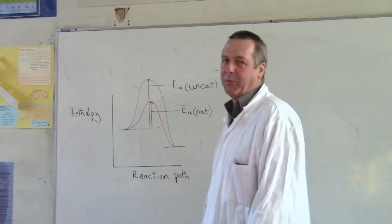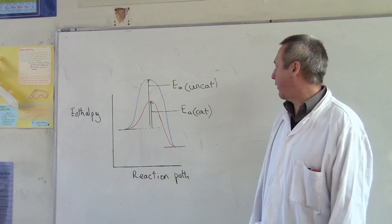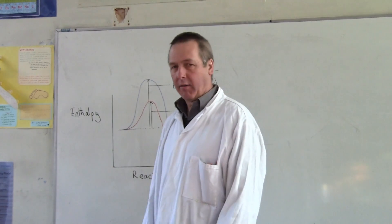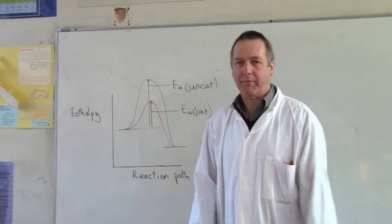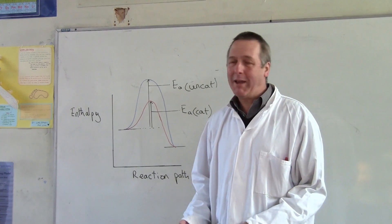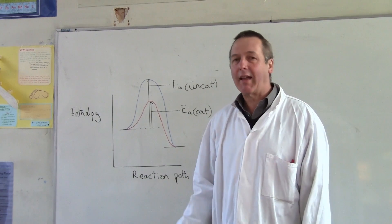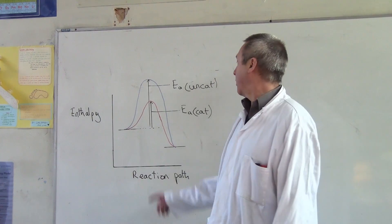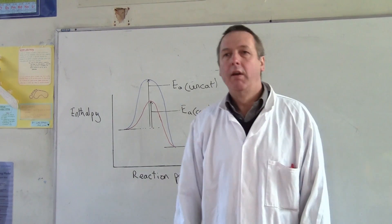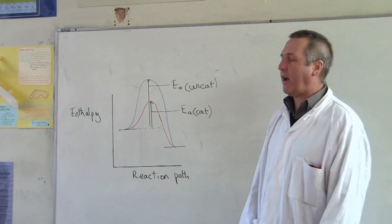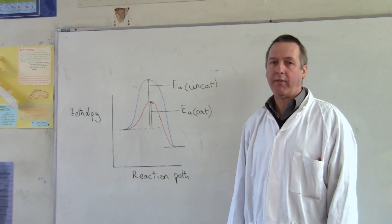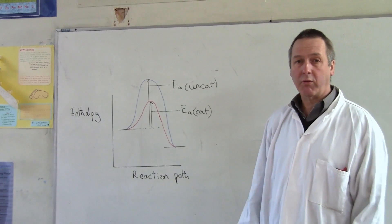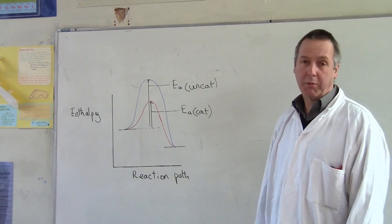From GCSE, most people are aware that a catalyst is a substance that speeds up the rate of a chemical reaction. But what most people aren't aware of is that before a chemical reaction can occur, the particles must collide with a minimum force, known as the activation energy, to produce a chemical reaction. We give the activation energy the symbol Ea. If a catalyst is present, it provides an alternative path with a lower activation energy, which means that more particles, when they collide, will have sufficient energy to produce a reaction.